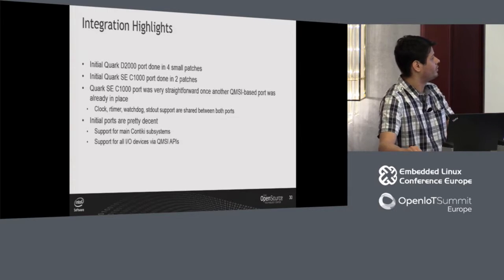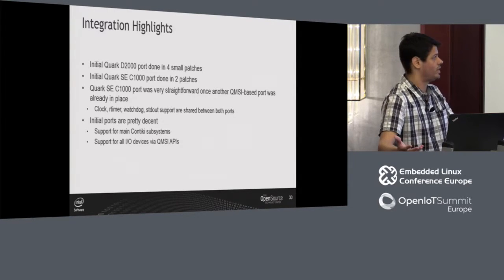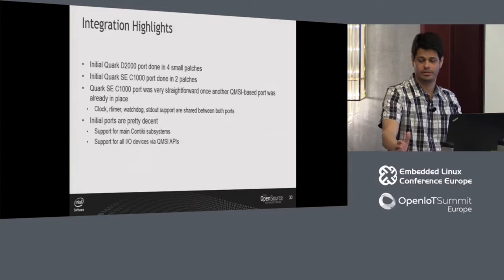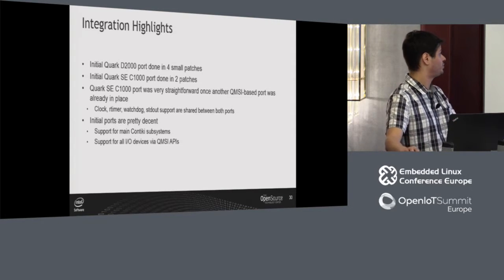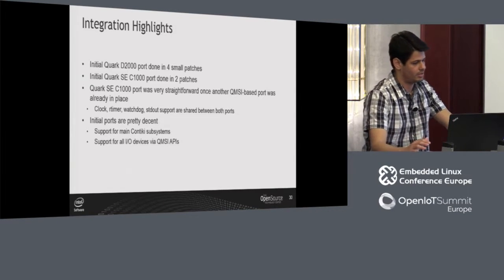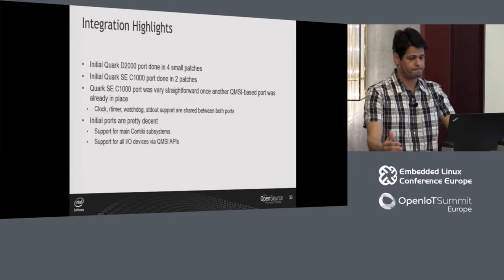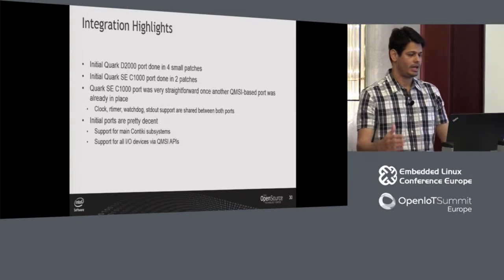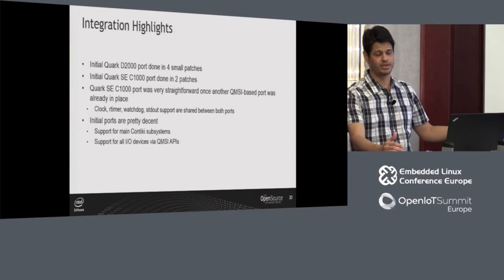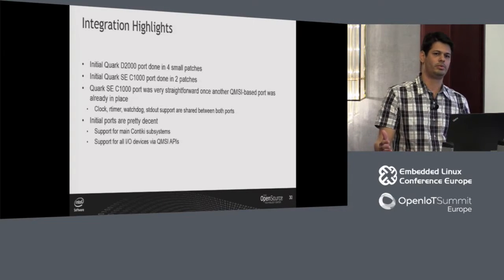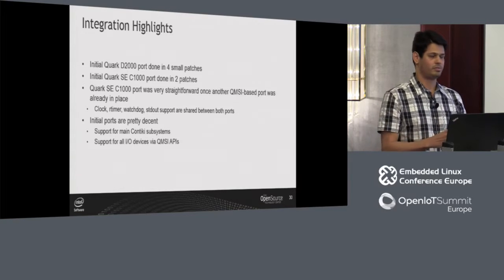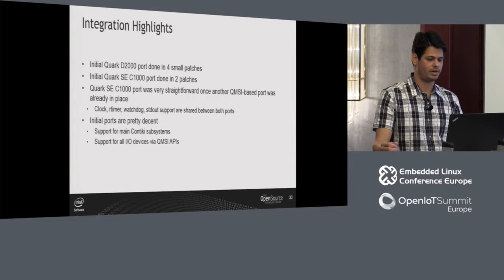The clock, rtimer, watchdog, and stdout support components are shared between the two ports, so we didn't have to re-implement them. For initial ports, I call them pretty decent — they support the main Contiki subsystems and already provide all IO APIs for applications, because you can access QMSI APIs directly. So for a very initial port, you have access to all IO devices and the basic Contiki systems are supported as well.